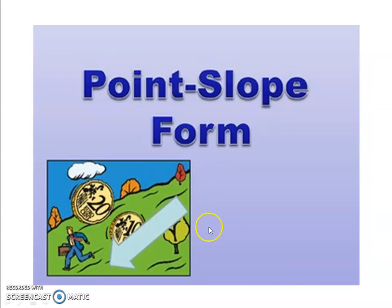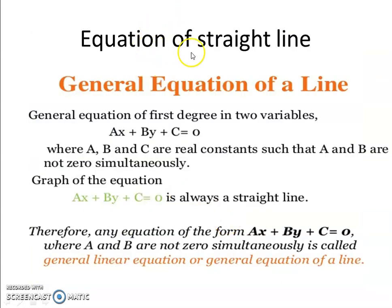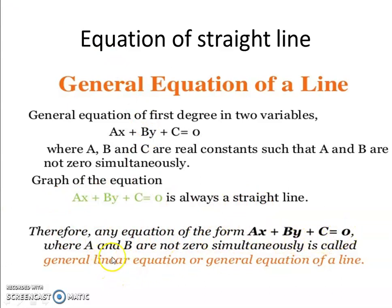Point slope form — we have to see in this picture. The equation of a straight line: the general equation of a straight line is given by the general equation of first degree in two variables. Always remember that in mathematics, x and y are variables and remaining alpha, beta are always constants, belonging to capital R, that is the real number set. We consider ax plus by plus c equal to 0, where a, b, c are real constants such that a and b are non-zero simultaneously. The graph of ax plus by plus c equal to 0 is always a straight line. Therefore, any equation of the form ax plus by plus c equal to 0, where A and B are non-zero simultaneously, is called the general linear equation of the straight line.